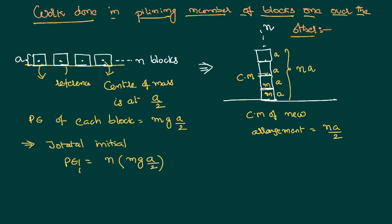Each block is having a mass M. Therefore the new potential energy of the system is, potential energy final you can call, N times Mg, because there are N blocks.